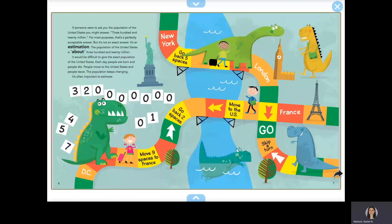The population of the United States is about 320 million. It would be difficult to give the exact population of the United States. Each day, people are born and people die. People move to the United States and people leave. The population keeps changing.